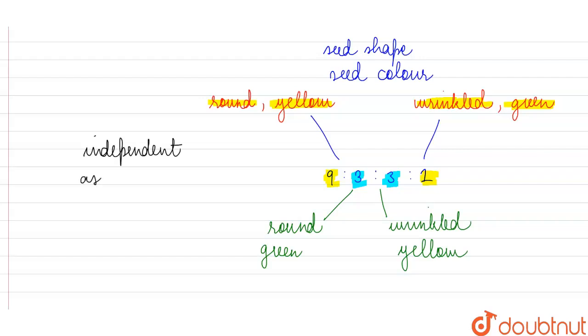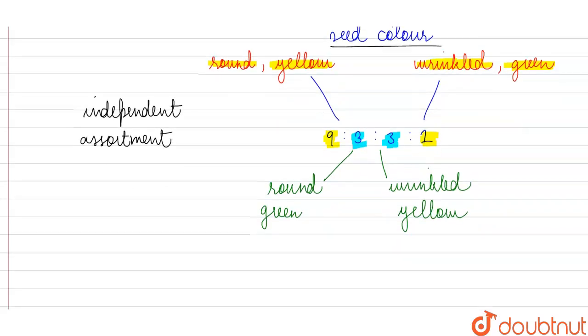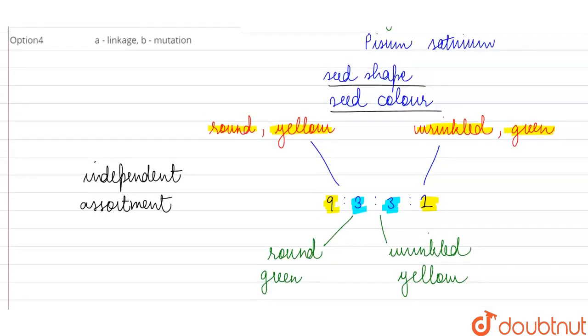because the two genes which we are observing here, they are actually distinct from each other. They are not associated with each other. Seed shape is under the control of different genes. Seed color is under the control of different genes. That is why this recombination is possible and these non-parental gene combinations are also appearing in the successive generations apart from the parental combinations.